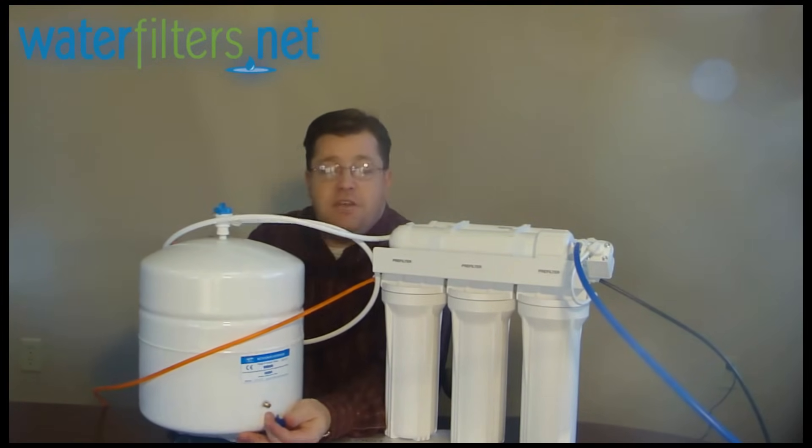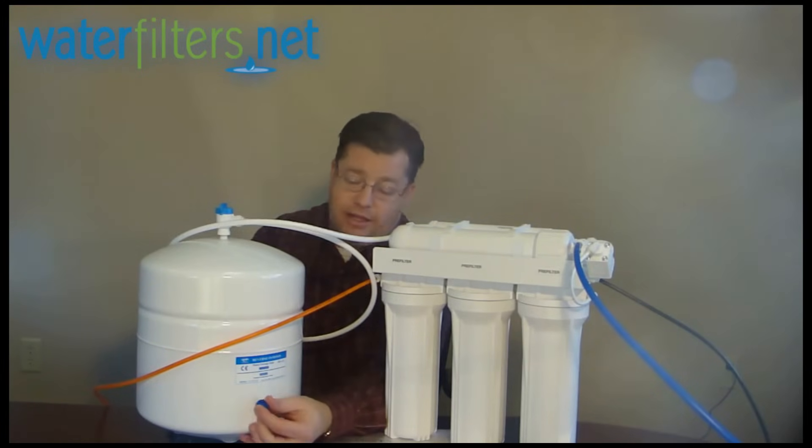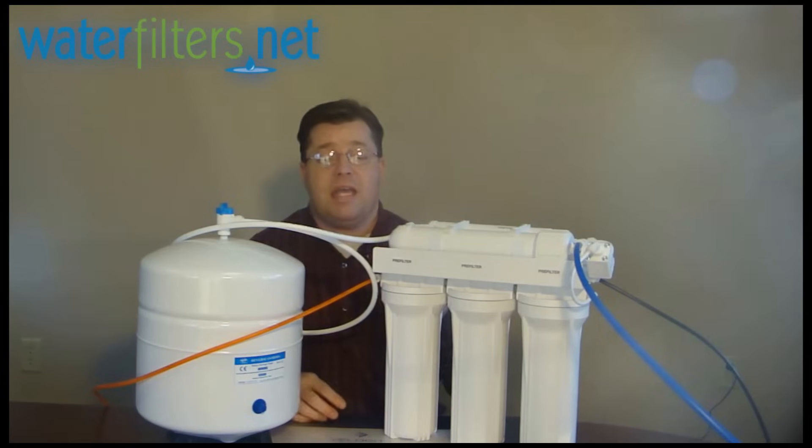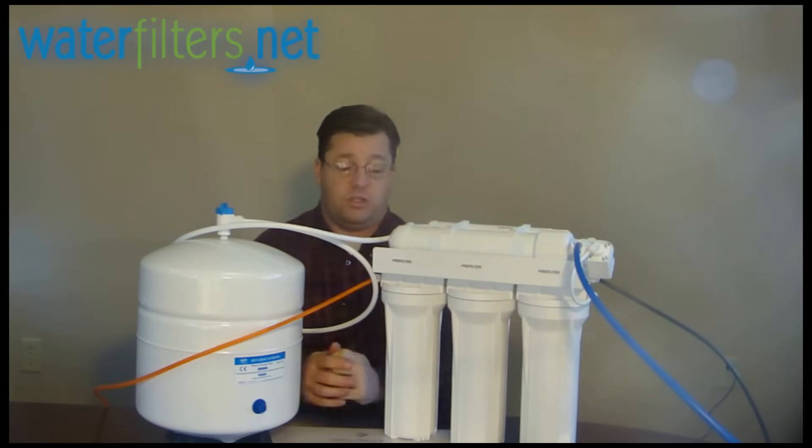Take your pressure gauge and measure the pressure when the tank is full. You can lift the tank and feel and tell that it's full most likely. And then if you have 35 to 40 and the tank is full, if water is running down the drain, you absolutely have a defective ASO valve and it needs to be replaced. That's the most common issue with RO systems.